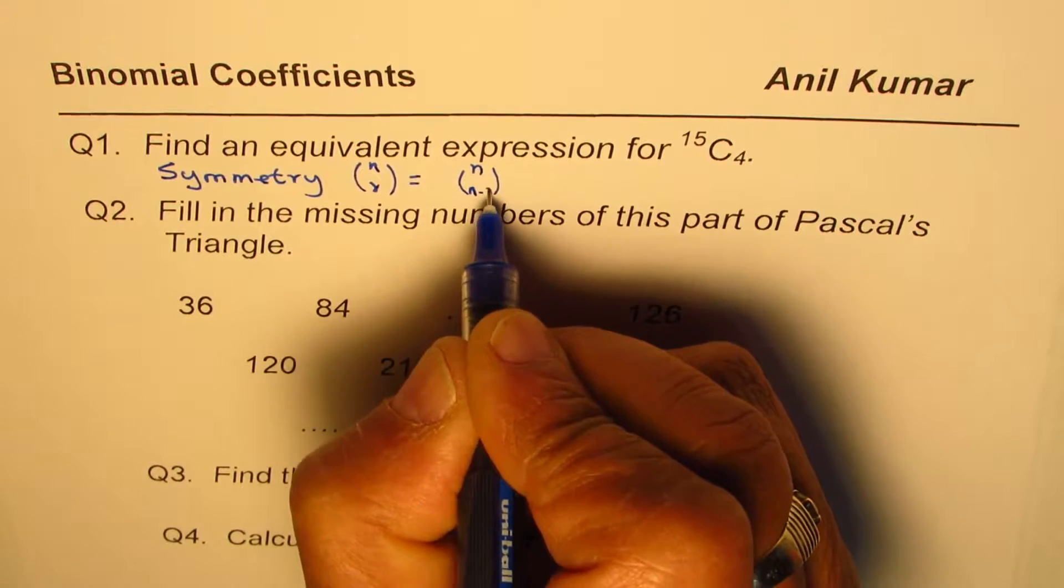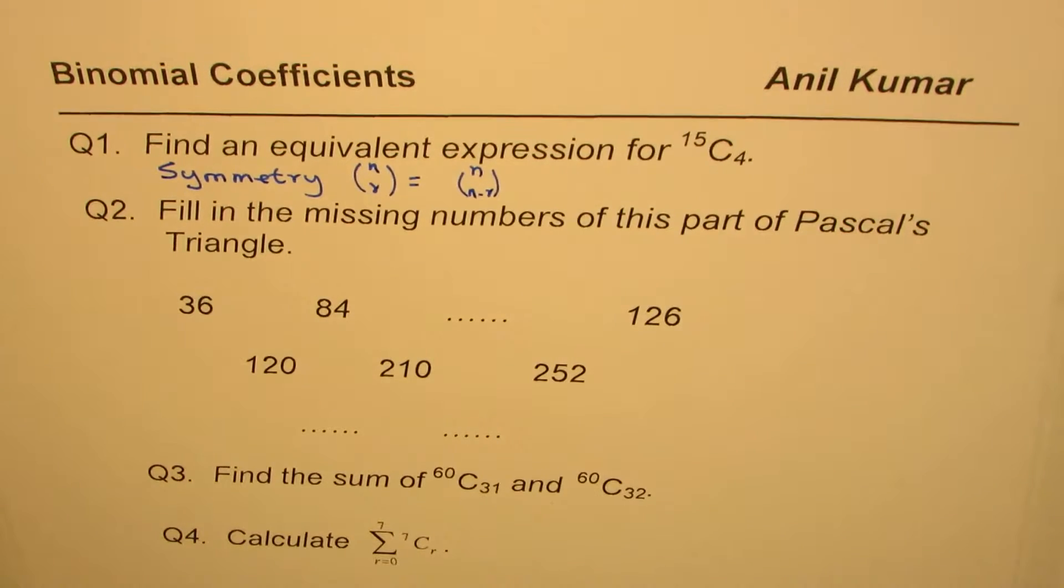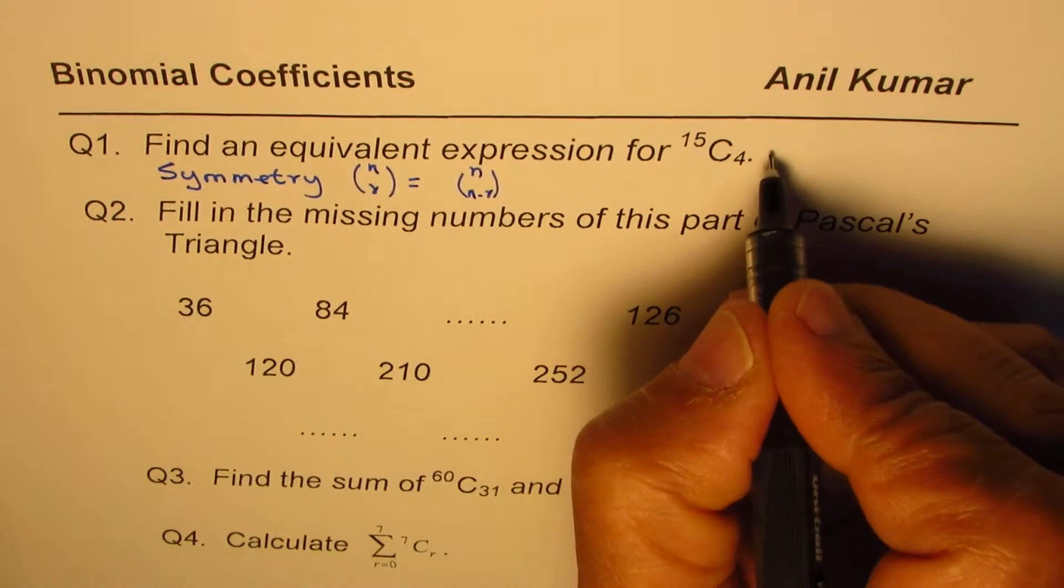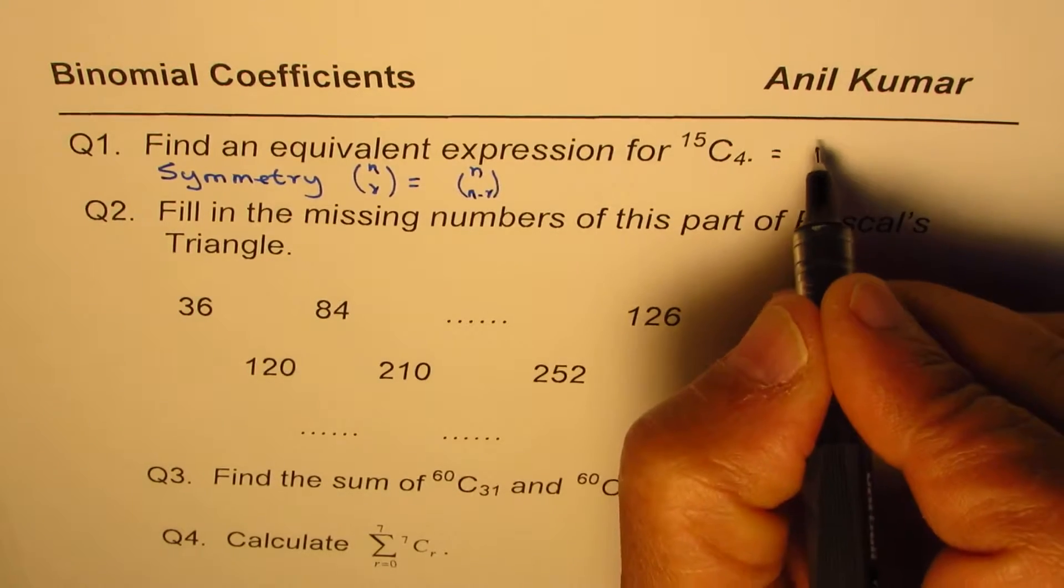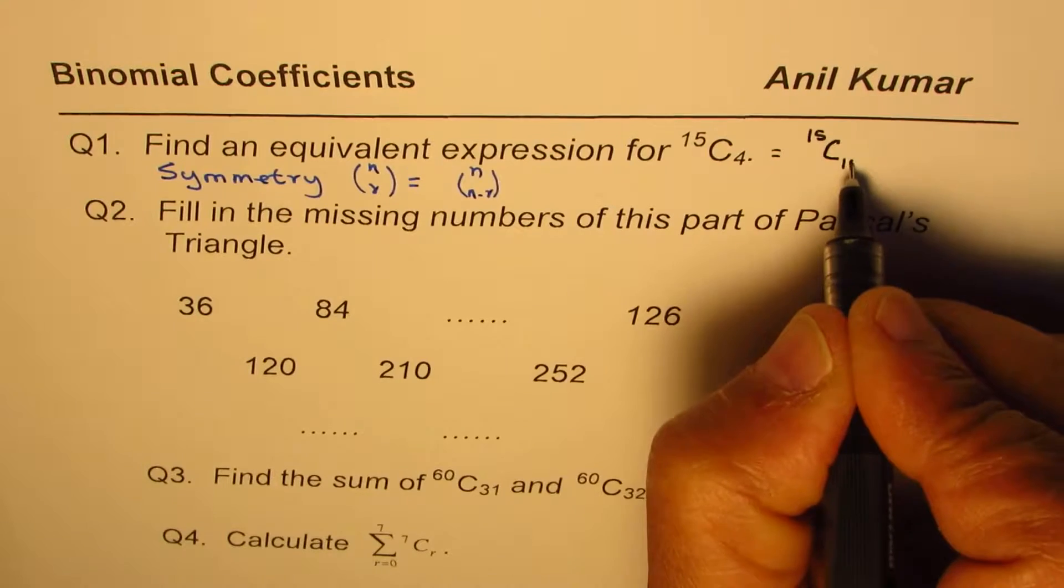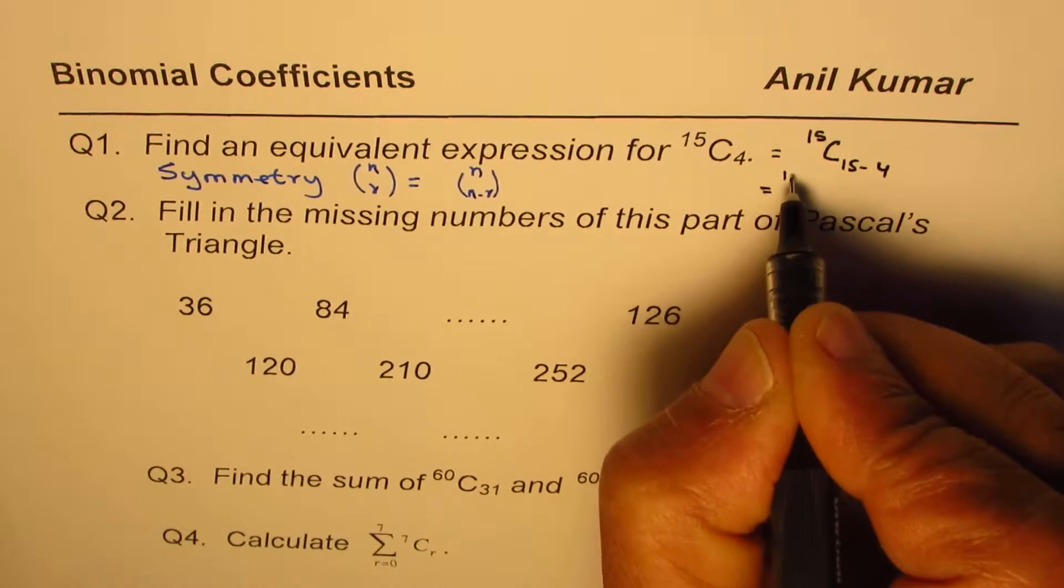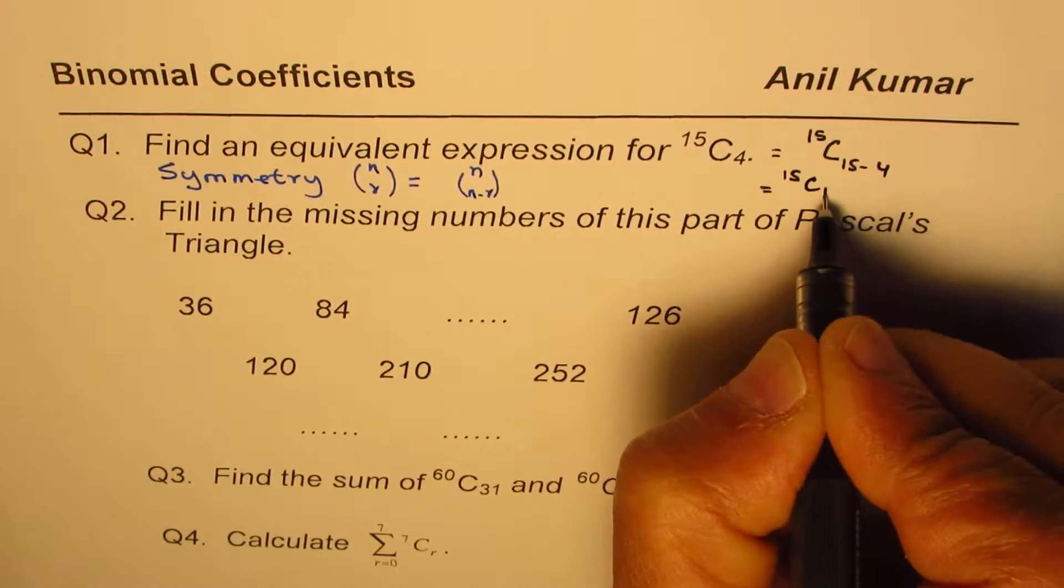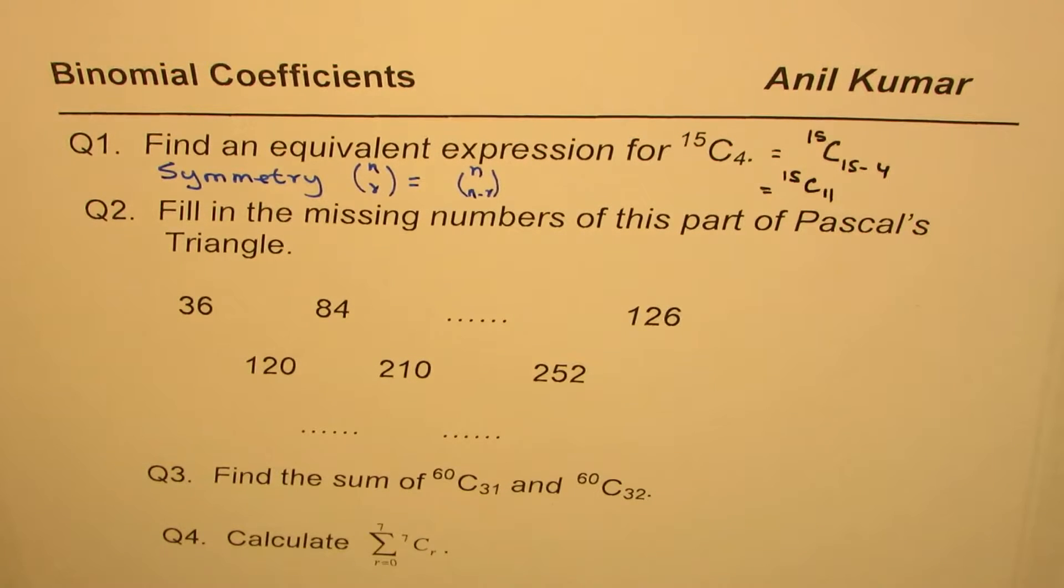So their value is same when we check from each end, and therefore we could write this as equal to 15C(15 minus 4), which is 15C11. So the equivalent expression to 15C4 is 15C11.